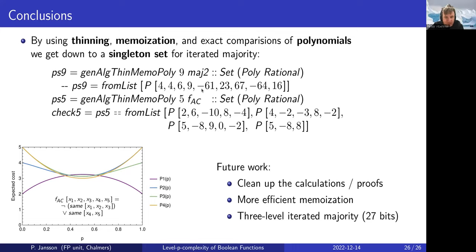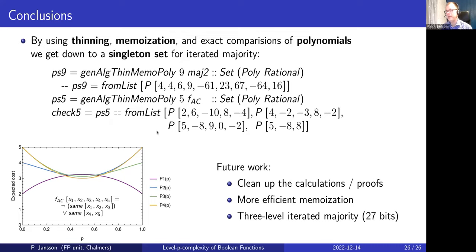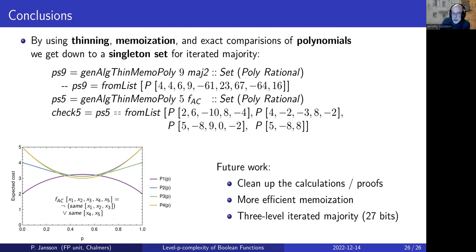Q&A: One question was about recovering the actual decision tree alongside the polynomial. It's quite straightforward to make a pair instance of the tree algebra, doing thinning on the polynomial component and keeping the decision tree on the side. This will arbitrarily break ties. You could also make an instance with a polynomial paired with all the trees achieving that polynomial, though that doesn't quite fit into the current thinning structure and would require a small modification.